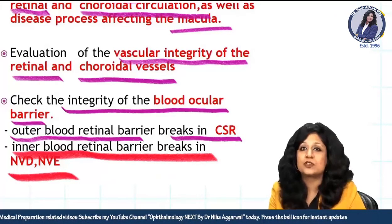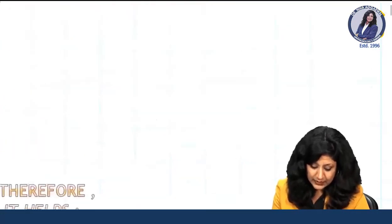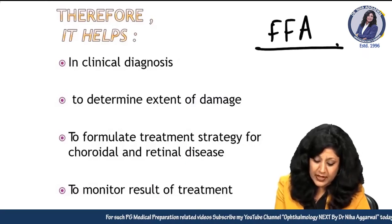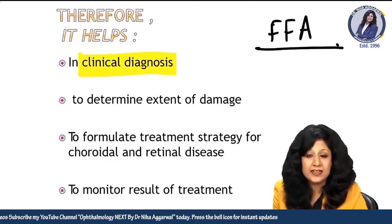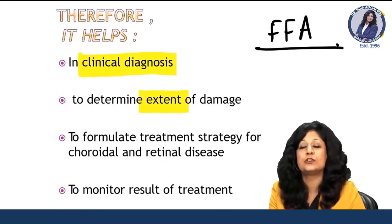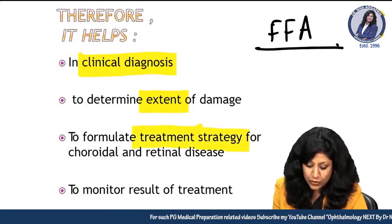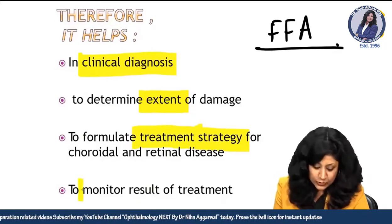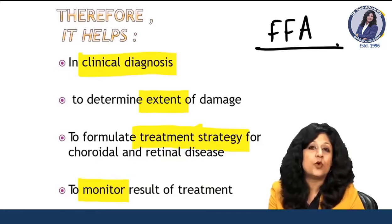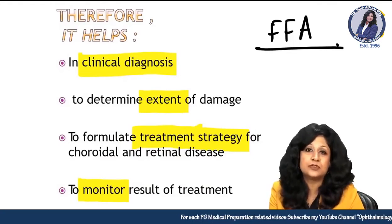NVD is neovascularization at the disc, and NVE is neovascularization elsewhere. Now, how does FFA help? It helps in making a clinical diagnosis, finding the extent of damage — not only giving a diagnosis but also showing how much severity there is. Number three, it guides treatment strategy. And also it is used for monitoring: what was the severity before and what is it afterwards, checking prognostic value.